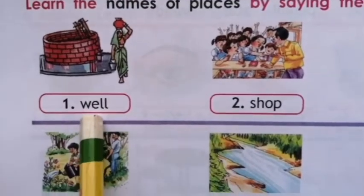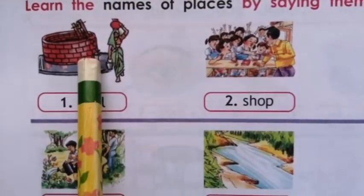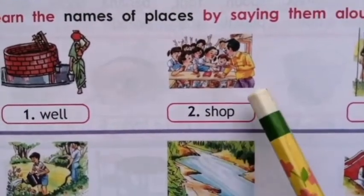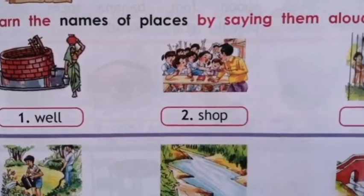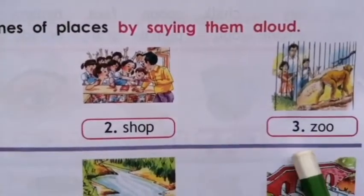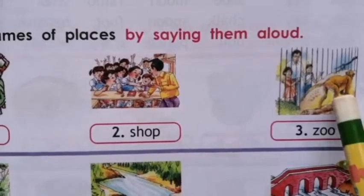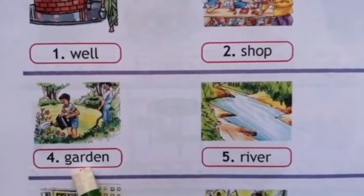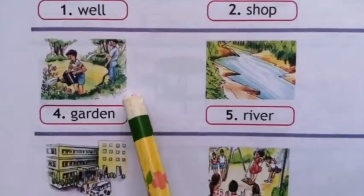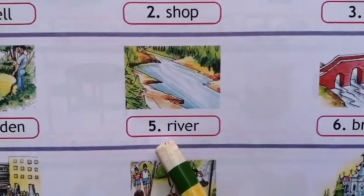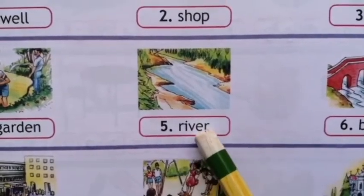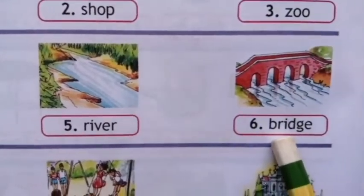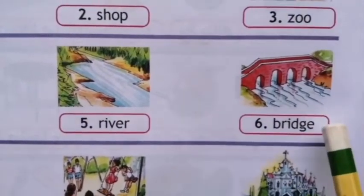W-E-L-L, well. S-H-O-P, shop. Z-O-O, zoo. G-A-R-D-E-N, garden. R-I-V-E-R, river. B-R-I-D-G-E, bridge.